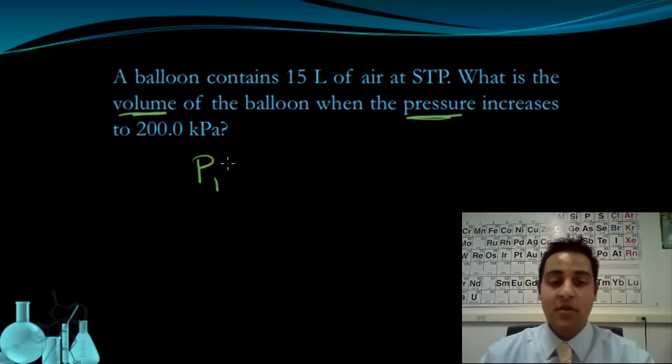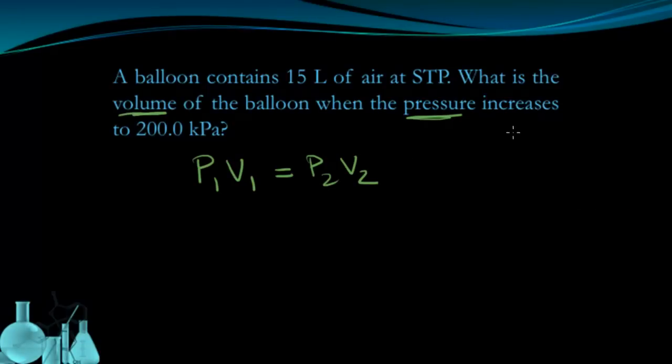So P1 times V1 equals P2 times V2. Now remember, P1V1 refers to the initial conditions. So to show our work, we're going to establish what these variables are. The initial pressure and the initial volume.